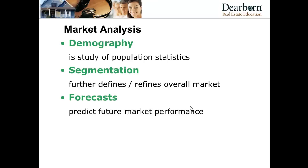Trends in price levels are all indicators of market conditions and give clues about the future direction of the market and the appropriate adjustments for time of sale. If your comparables sold some number of months prior to the subject, you'd want to make adjustments based on the price levels and change in market conditions over that period. Understanding what makes a market and what may differentiate the market your subject property is in from where a comparable is located is important.